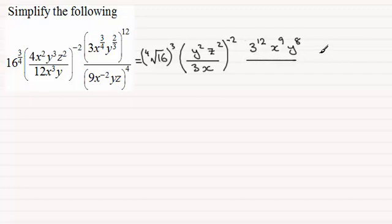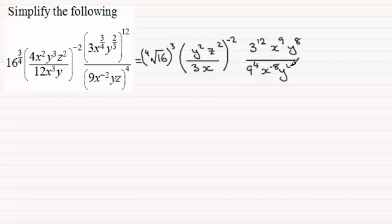Now we'll divide by what we get on the bottom. We're going to have 9 to the power 4. Then x to the power minus 2, all to the power 4 — multiply minus 2 by 4, giving x to the power minus 8. Then we've got y to the power 4 and z to the power 4. That simplifies things a bit.